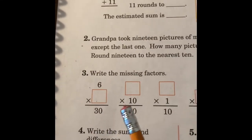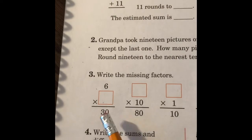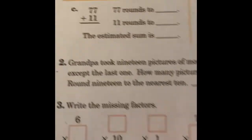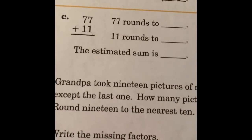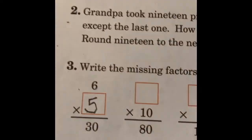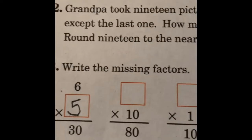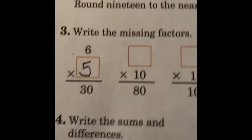Write the missing factors. These are missing numbers. 6 times what is going to get me 30? You know that 6 times 5 equals 30. 6 times 5 equals 30. And you're going to do missing numbers on all of these. Okay. All missing numbers.